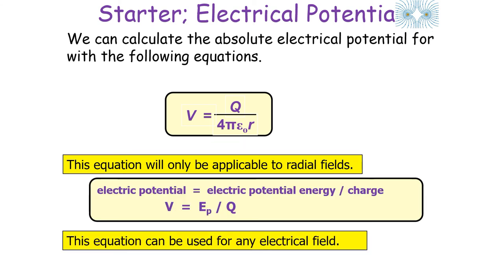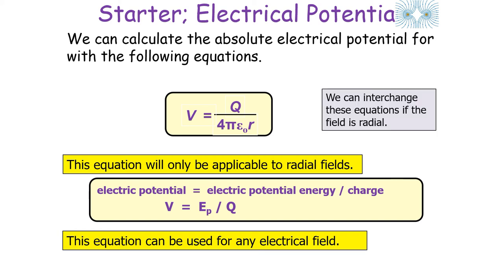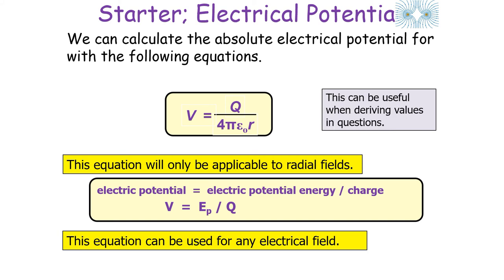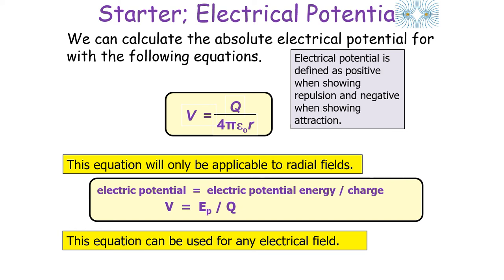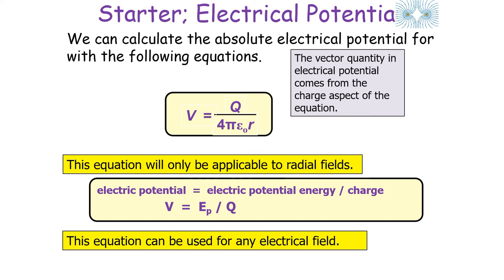These equations can be used for either radial fields or any electrical field depending on context, and interchanged when the field is radial. It's important to note that electrical potential is a vector — positive for repulsion and negative for attraction — whilst electrical potential energy is a scalar, as it's stored in the object and there is no direction to stored energy.